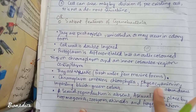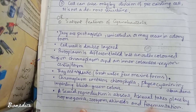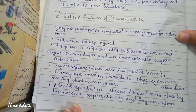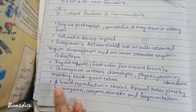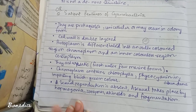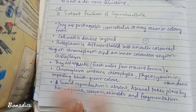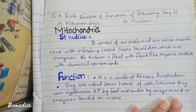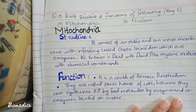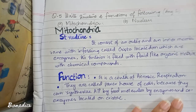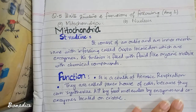The color of chromoplasm is due to the presence of pigments Chlorophyll A and Phycocyanin, giving them their blue-green color. Asexual reproduction occurs through hormogonia, zoospores, akinetes, and fragmentation.